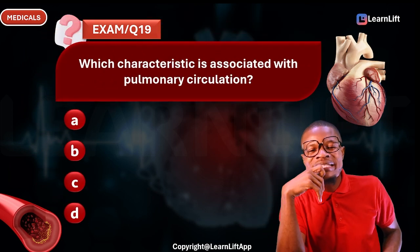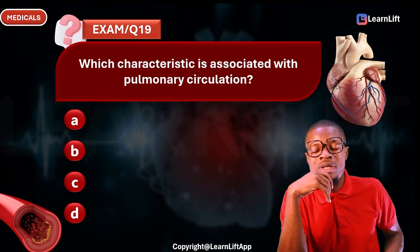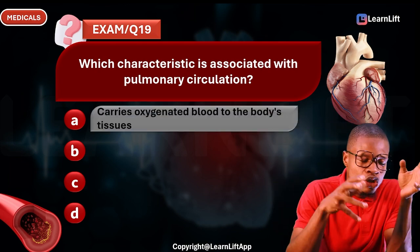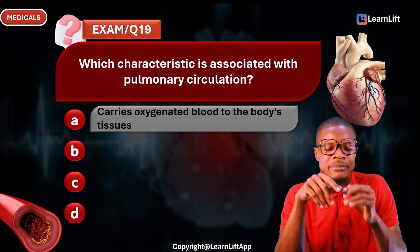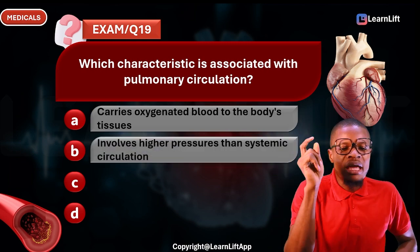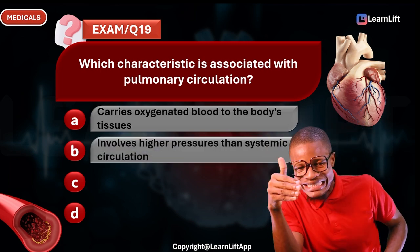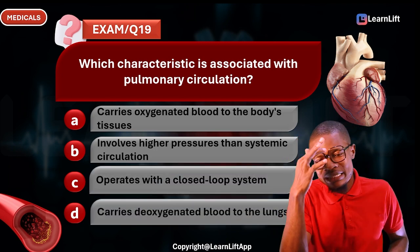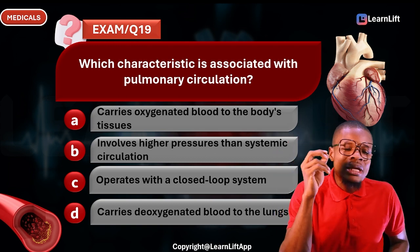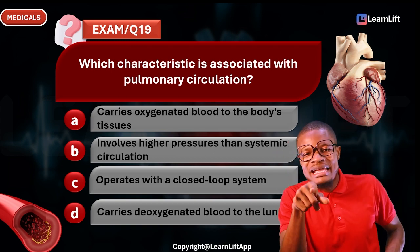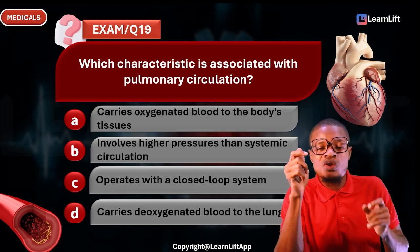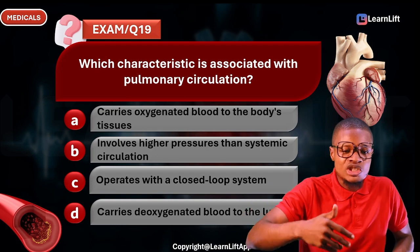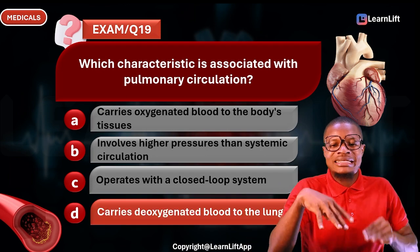Question nineteen: Which characteristic is associated with pulmonary circulation? Pulmonary circulation does not carry oxygenated blood — rather it carries deoxygenated blood to the lungs to receive oxygenation. That is Option D, the correct answer.